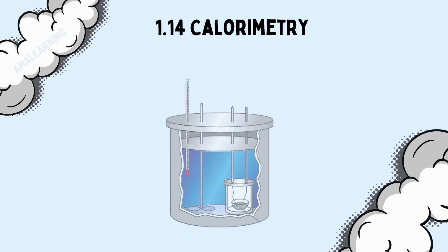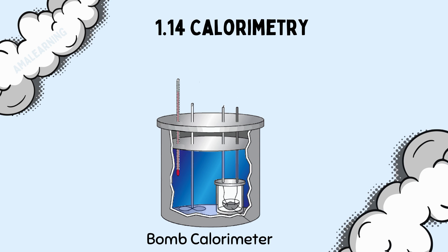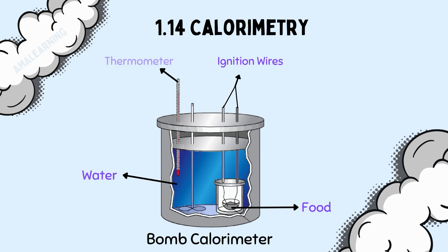You may also get exam questions about the bomb calorimeter. The bomb calorimeter has ignition wires so that the food material can be burnt. The burning material then heats up the water. It has a thermometer so the starting temperature and the final temperature of the water can be measured. The stirrer ensures that heat is evenly distributed throughout the water. The bomb calorimeter also has a lid to reduce heat loss — in other words, it acts as an insulator.